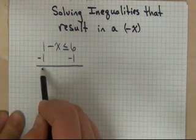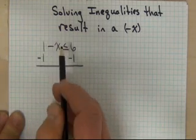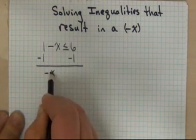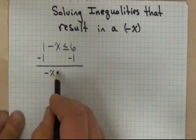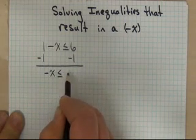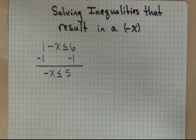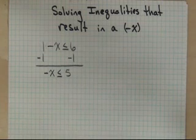1 subtract 1 is nothing. This negative sign is still there so it needs to come down and I would end up with negative x. I keep the same inequality symbol, is less than or equal to 5. So I'm ending with an inequality where I've got a negative x.